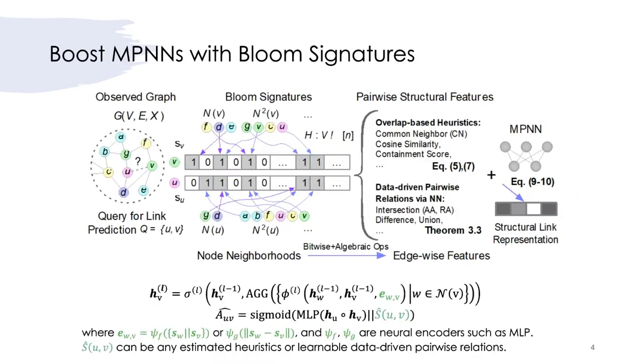Our proposed link prediction framework combines message-passing neural networks, or MPNN, with bloom signatures in the following manner. We encode a multi-hop neighborhood of each node with a bloom signature, which we use to derive overlap-based heuristics and data-driven learned features by feeding them into MPNN and the MLP link predictor.